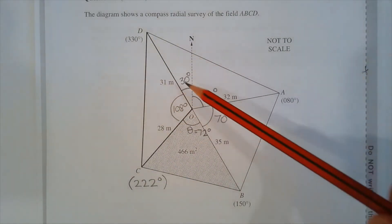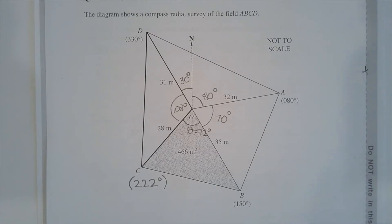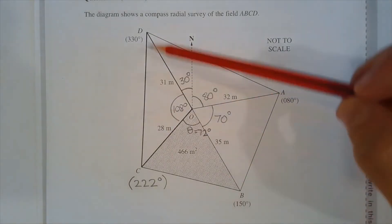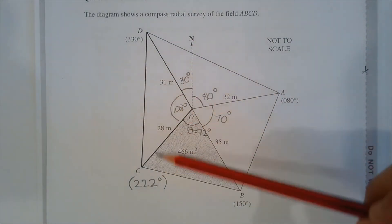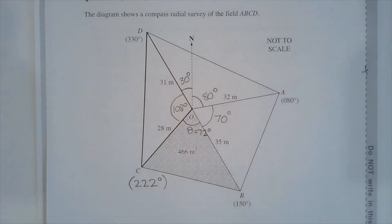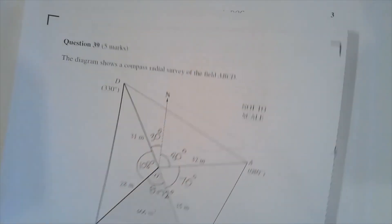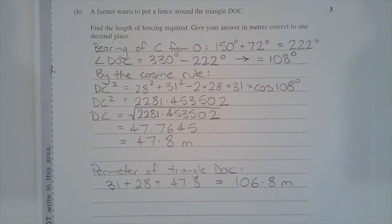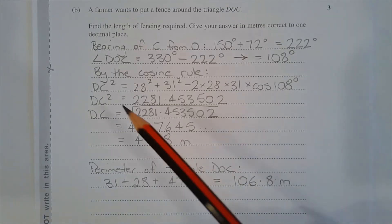To find the perimeter of triangle DOC, we can apply the cosine rule to find length DC, since we have two known sides and the included angle.